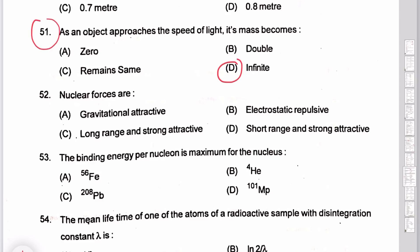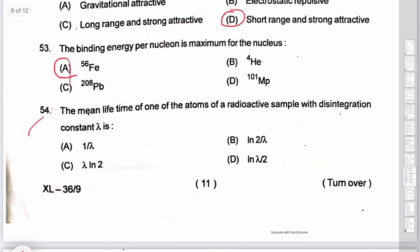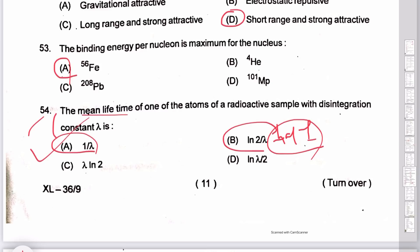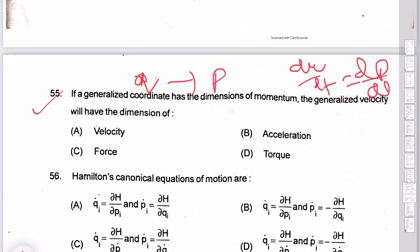Question 52: nuclear force — short-range force, attractive force, spin-dependent, not charge-dependent. Question 53: binding energy of iron Fe-56 is 8.8 MeV. Question 54: half-life = ln2/λ; mean life = 1/λ — option A, mean life time 1/λ is the derivation. Question 55: generalized coordinate — the time derivative of momentum dp/dt is the correct answer.